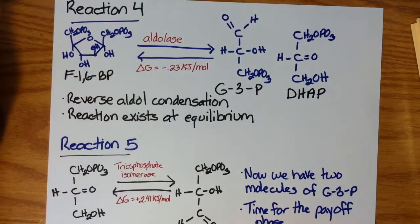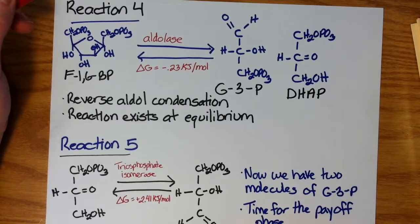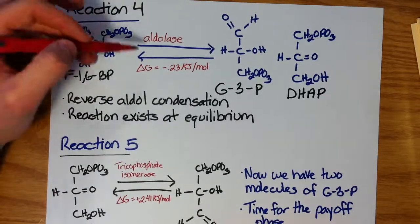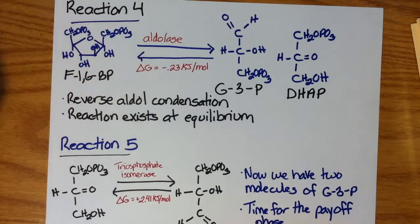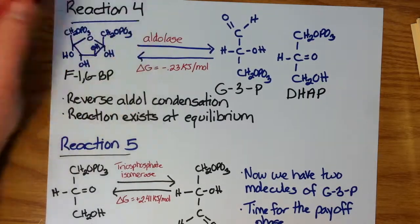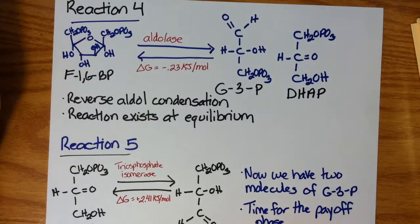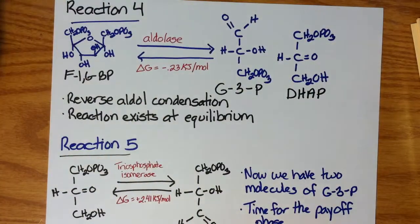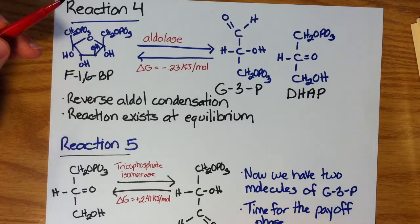The reason it's called aldolase is because it's a reverse aldol condensation. And again, similarly to reaction 2, the free energy change is relatively neutral. It's close to zero. That is negative 0.23 kilojoules per mole. So it can proceed in either direction fairly easily. But we have a problem here. Only one of these molecules can proceed through the rest of the glycolytic pathway, and that is glyceraldehyde-3-phosphate.